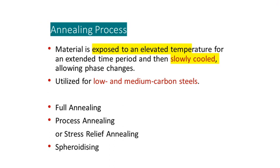We start with the first kind of heat treatment process: the annealing heat treatment process. As with any heat treatment, the basic steps are: heating up to the required temperature range, holding for a sufficient period of time, then cooling to room temperature at the required cooling rate and in the required environment. Annealing involves exposing the material to an elevated temperature for a long period of time, then slowly cooling so that phase transformation takes place. It is commonly employed for low carbon and medium carbon steels. Annealing is further classified into full annealing, process annealing (also called stress relieving annealing), and spheroidizing annealing.